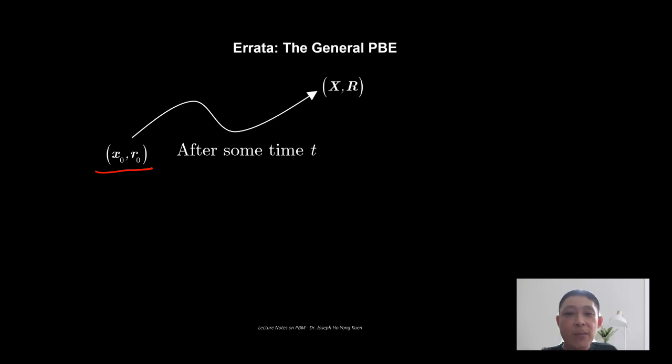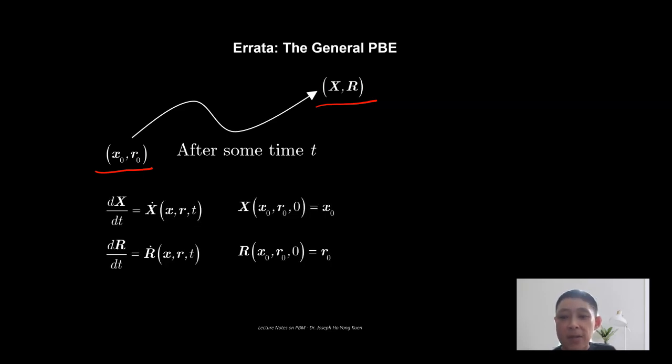Beginning at this initial state, as time goes on you would imagine that the particle would cruise through the internal and external coordinate space and eventually arrive at a coordinate that we denote as capital letter X and capital letter R. So the trajectory of the particle through the internal and external coordinate space would fulfill these two ordinary differential equations simultaneously.